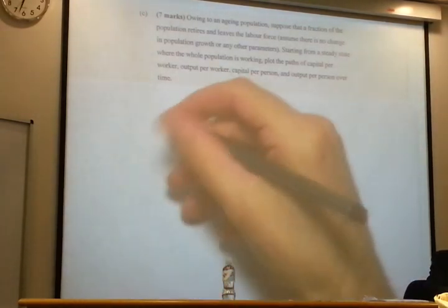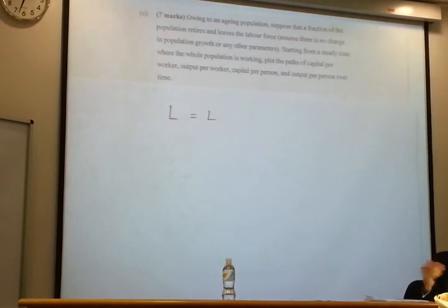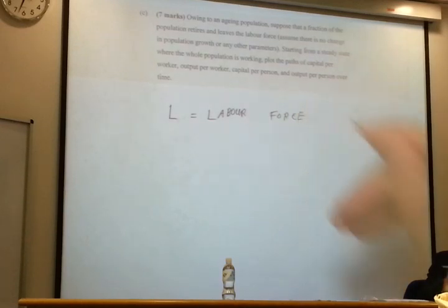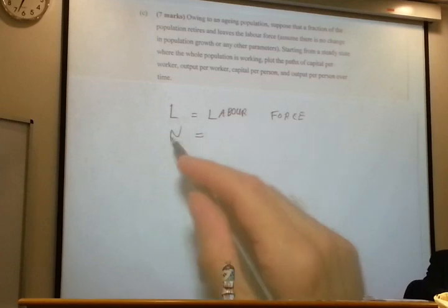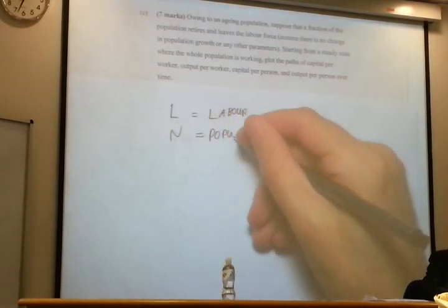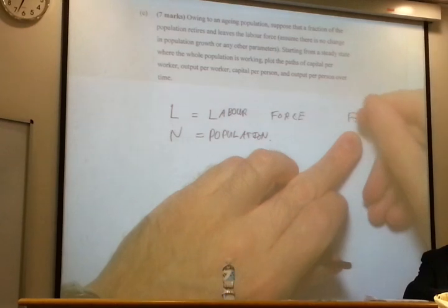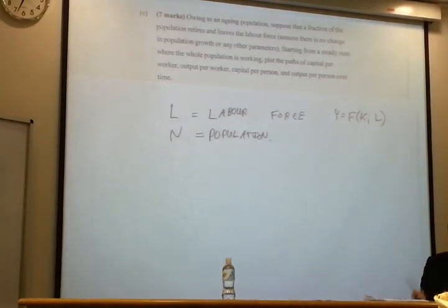So the first thing is to be clear what we mean by the labor force. So L, the thing that went to the production function, now just means those people who are working. It doesn't mean the population. Now there's no unemployment in the Solow model, so the entire labor force is working. However, there isn't full participation anymore. There's the population, and I'm going to call that N. Some of those are outside of the labor force, they're retired.